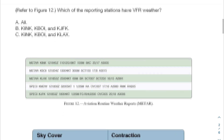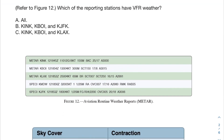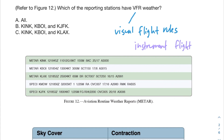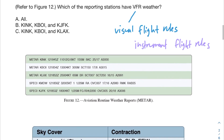Let's move on to the second problem using the same Figure 12. It's asking which of the reporting stations have VFR weather. VFR stands for Visual Flight Rules — this means a pilot is able to rely on their eyes to fly, because the visibility and cloud ceiling are large enough. The alternative is IFR, Instrument Flight Rules, where visibility or cloud ceiling is so low that pilots must rely on instruments.